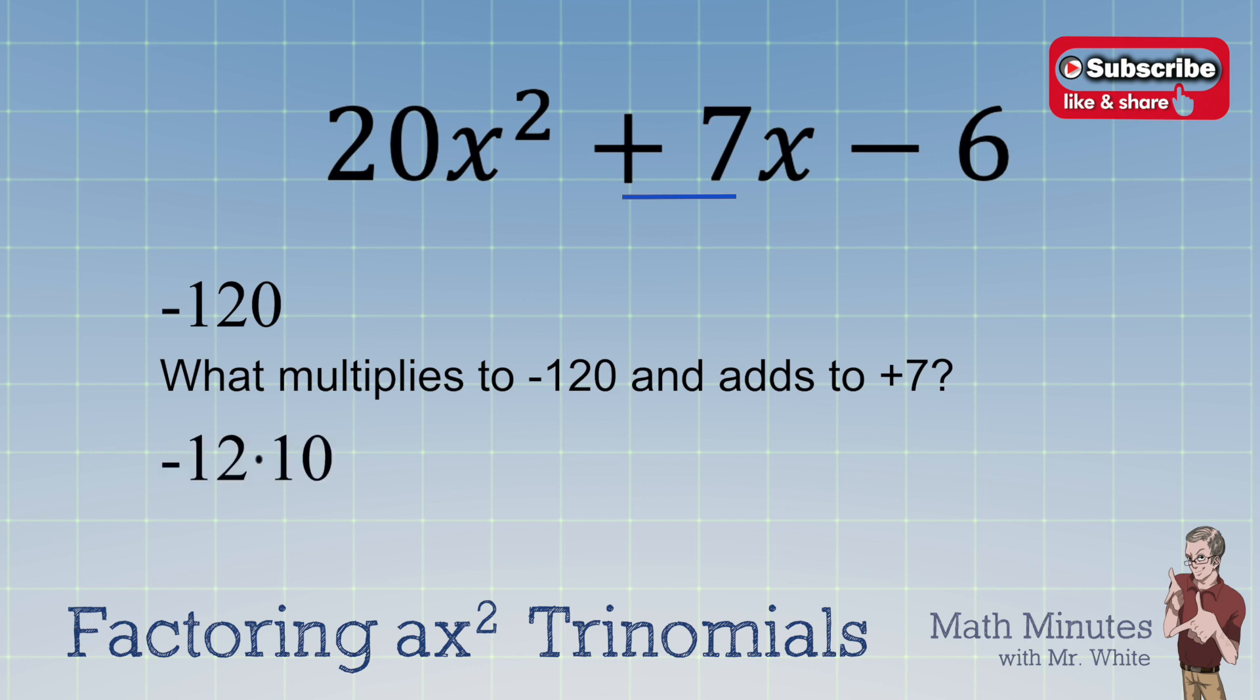Is it negative 12 times 10? That equals negative 120, but negative 12 plus 10 is negative 2, so nope, that doesn't work. What about negative 6 times 20? That makes negative 120, and if you add them up, it equals 14. Oh, nope, that's not the combination. What about negative 8 and 15? When added, they make, there it is, the positive 7 that we're looking for.